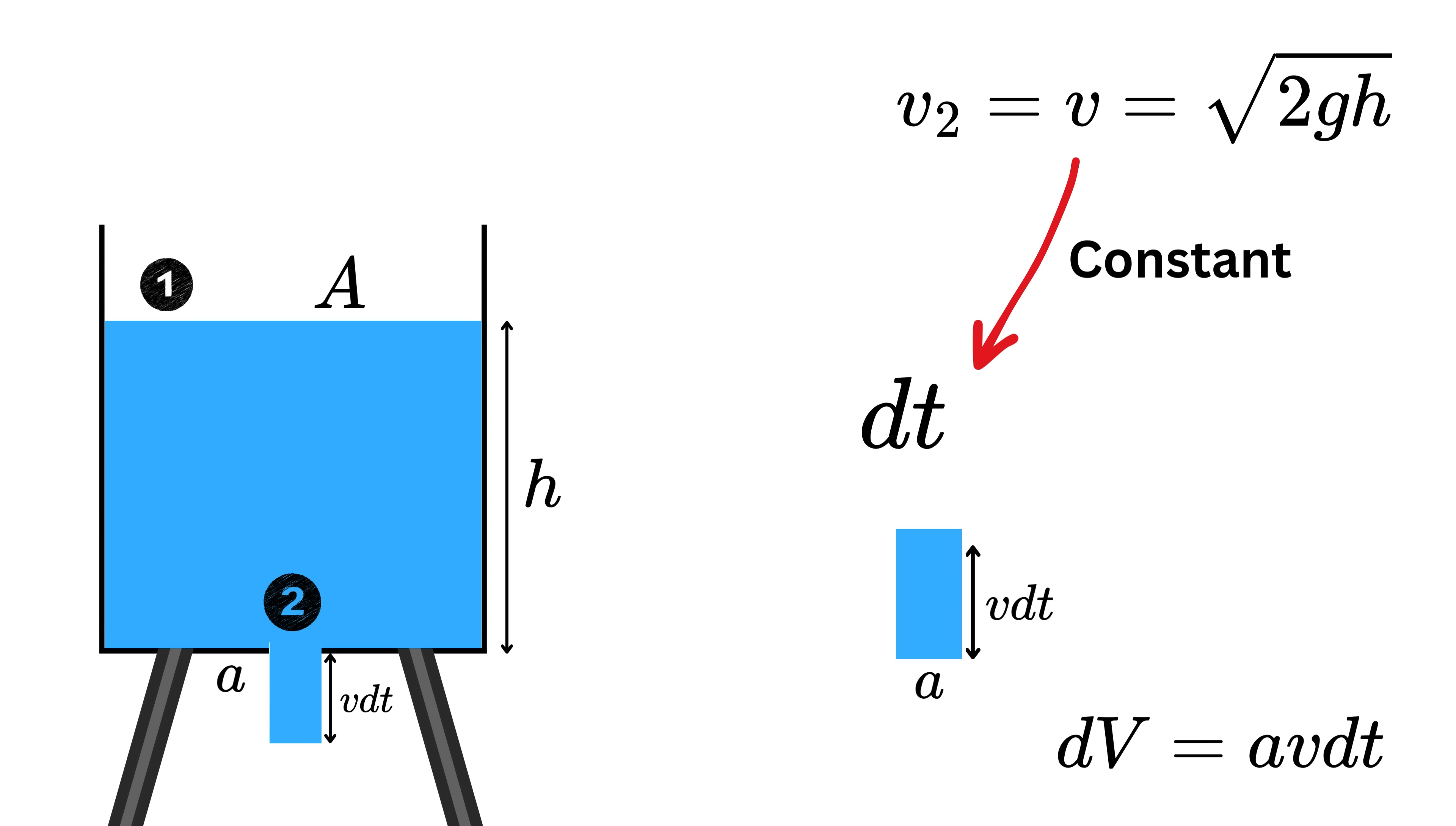So dV equals small a times v times dt. This gives us the volume of water flowing out in that tiny time dt. Now, during the same time dt when water was flowing out, the height of water inside the tank decreased by the amount dh. So the change in volume inside the tank is capital A times dh, and since the height went down, we put a minus sign which shows a decrease in volume.